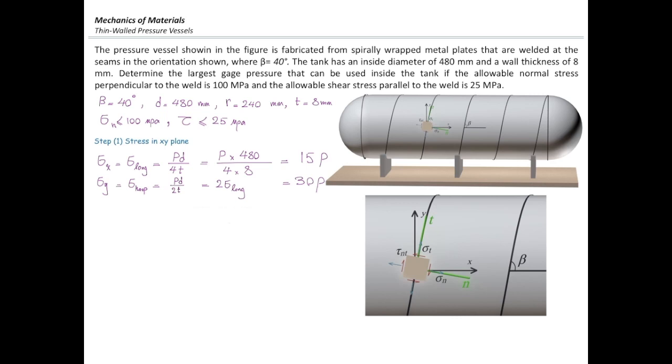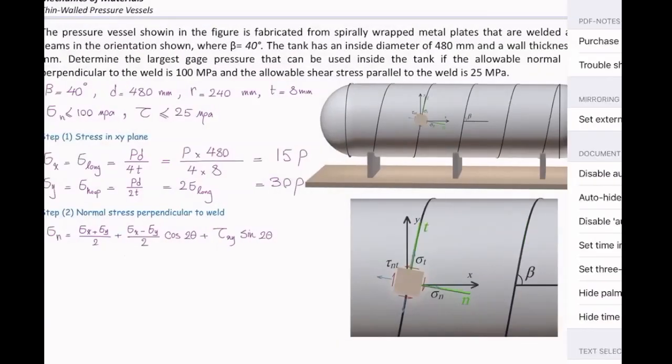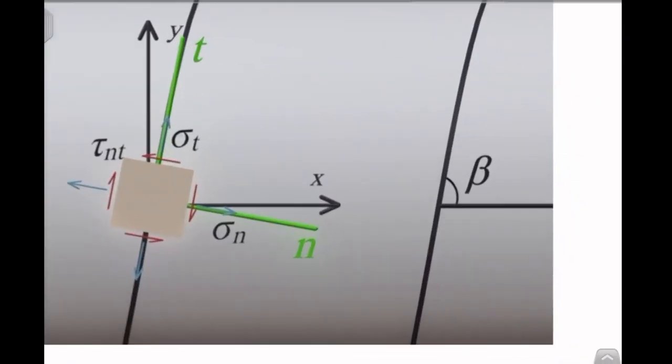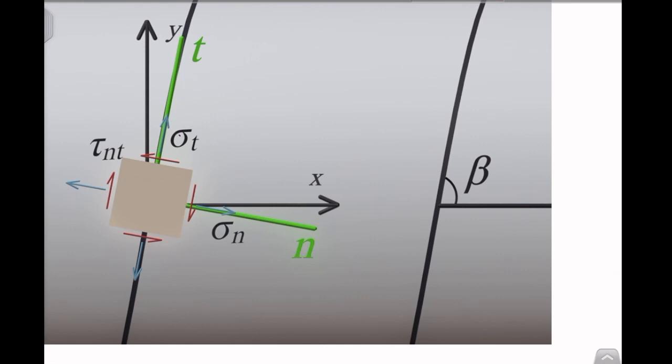Now, I'm gonna rotate that element and determine how much are stresses in the rotated plate. Rotate the element to get to that n direction. Start from x-axis. How much should we rotate that? Let me show it on the right side. I want to get to this plane. Should I rotate it by beta? It's 90 minus beta. That would be 50 degrees.